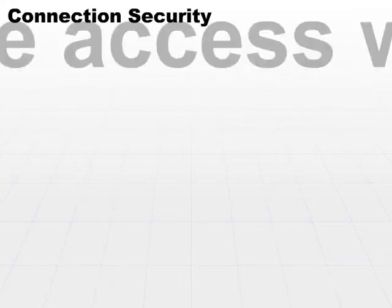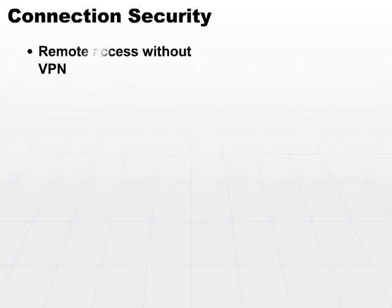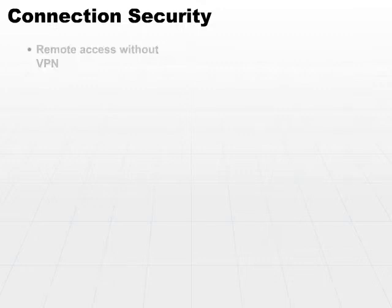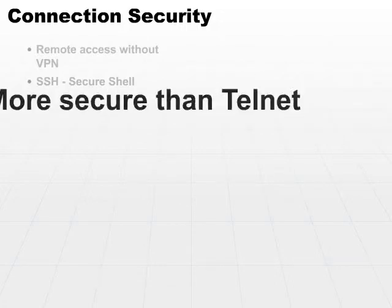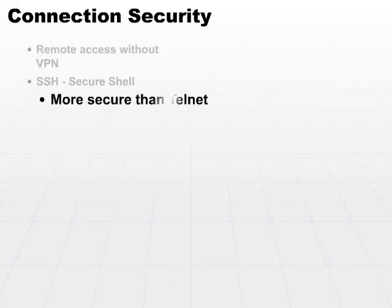You can remotely access networks with a measured amount of security without using VPNs. If you're not using a virtual private network, there are other connection security mechanisms you can use, one of which would be SSH, or a secure shell. Telnet is a very poorly secured way of connecting to a remote machine, but SSH gives us a more secure mechanism.